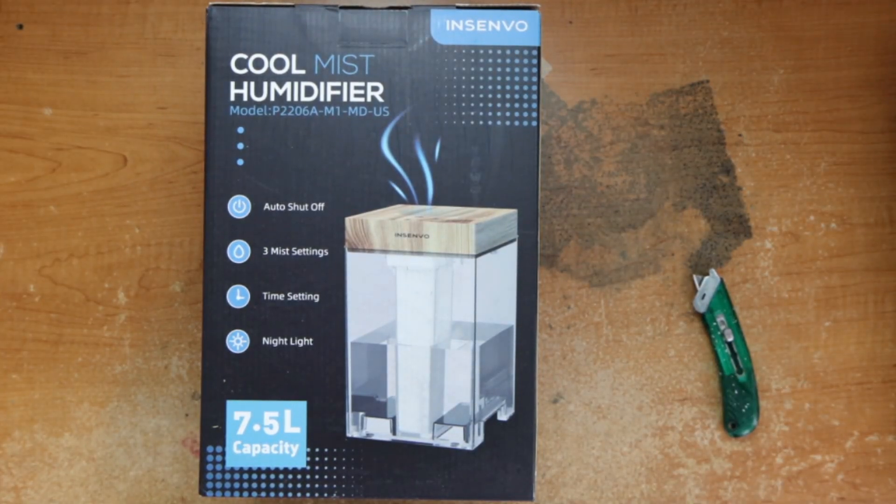Hey guys, this is Robert and today we're going to be unboxing this cool mist humidifier. Features it has: auto shut off, three mist settings, time setting, night lights. It has a 7.5 liter capacity.